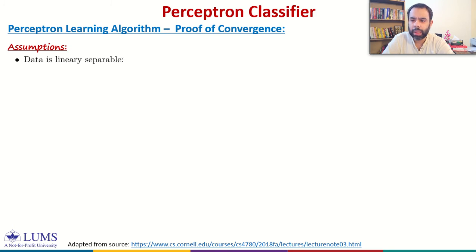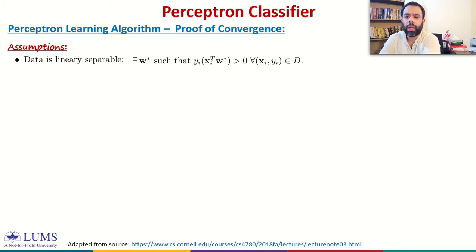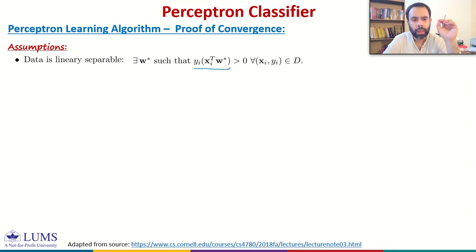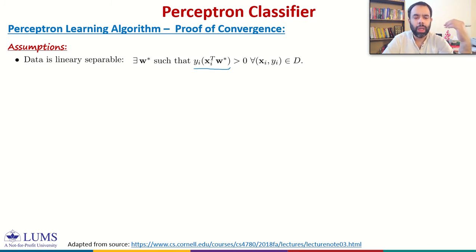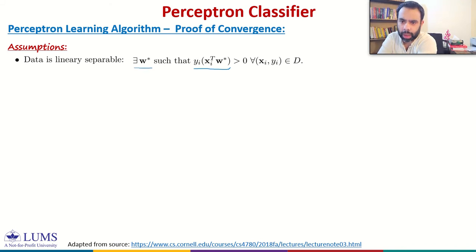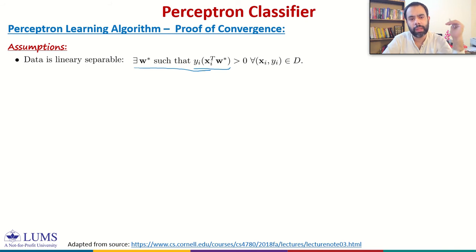The first assumption is that the data is linearly separable. If the data is linearly separable, there exists w* such that yi times xi transpose times w* is greater than zero for every point in the training data. This means we do not have any misclassification — every feature vector is on the correct side of the hyperplane. All points labeled one are on one side, and all points labeled minus one are on the other side. So w* defines a separating hyperplane that separates the two classes in the feature space.